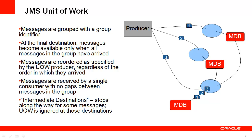Unit of Work ensures that messages are processed in order and only if the complete set has been generated and received. The messages in a Unit of Work batch will be delivered to a consumer only after all messages identified for the Unit of Work are available to be delivered. In addition, the messages will be reordered in the sequence that they are generated by the producer.